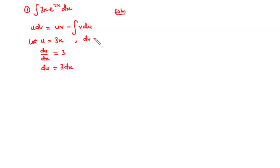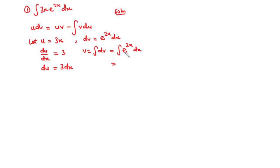We have dv equal to e to the power 2x dx. Next we find v, which is the integral of dv — that is, the integral of e to the power 2x dx. When you integrate e to the power 2x, you get e to the power 2x at the numerator, and you differentiate 2x with respect to x to get 2 at the denominator. So v equals e to the power 2x divided by 2.